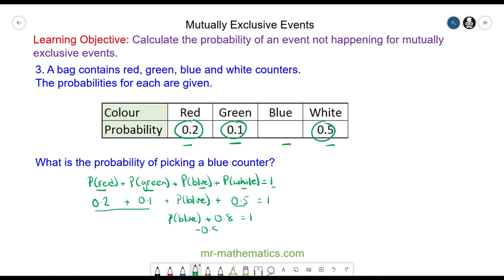By taking away 0.8 from both sides, these will cancel and we're left with the probability of blue equals one minus 0.8, which is equal to 0.2.